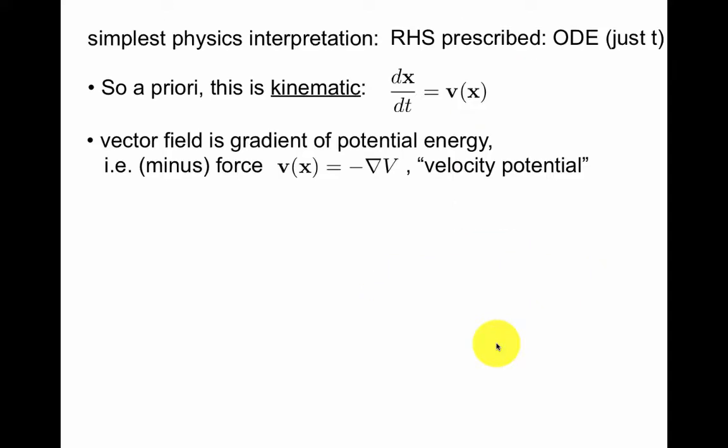Now, what was the physics interpretation? We said that it wasn't completely clear what the mapping was between this dynamical system, x dot equals Ax, and the physics. So here, the right-hand side should be viewed as prescribed. This is just kinematic. We're saying x dot is the velocity. In some sense, the definition of velocity.